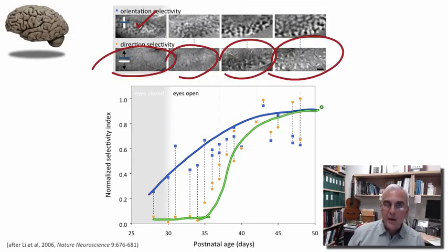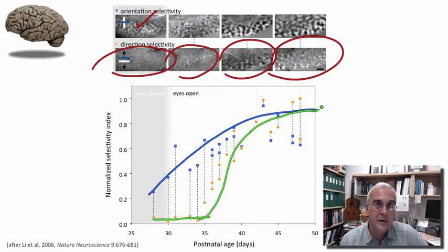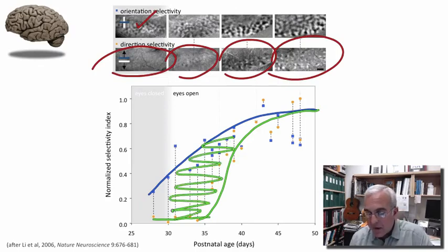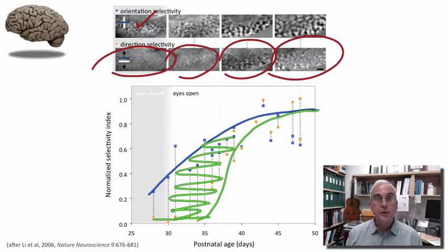After about two to three weeks of postnatal life, at least in this animal model, mature levels of orientation and direction selectivity are established. The fact that there seems to be this lag in the development of direction preference suggests that perhaps vision in this early period of postnatal life is actually doing more for the development of direction preference than it is for orientation preference.